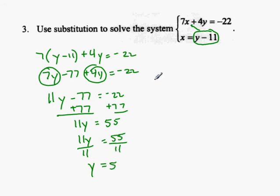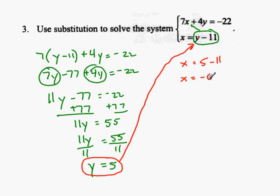Now that I've found the value of y, I'm going to take this value, y equals 5, and substitute that in for the y in my x equals y minus 11 equation. So I'm going x equals 5 minus 11. So I have x equals negative 6.